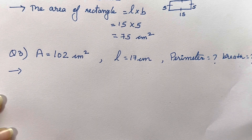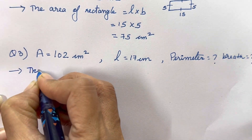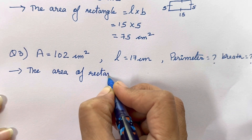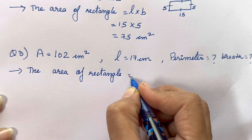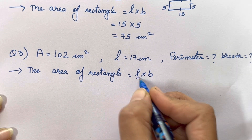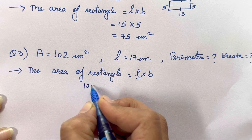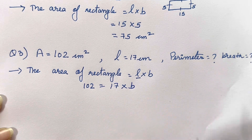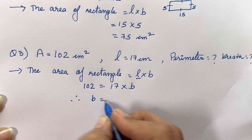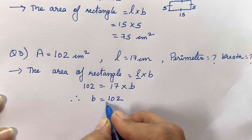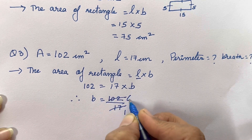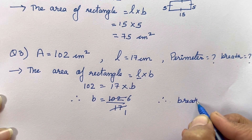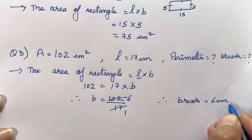What is the formula for the rectangle? Area of rectangle is length into breadth. We have the length and we have the area. Area is 102, length is 17, breadth we don't know — so we will find it out. Therefore breadth is 102 divided by 17. 17 sixes are 102, therefore the breadth of the rectangle is 6 centimeter.